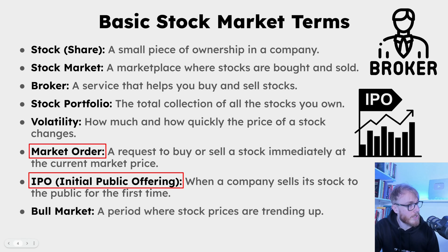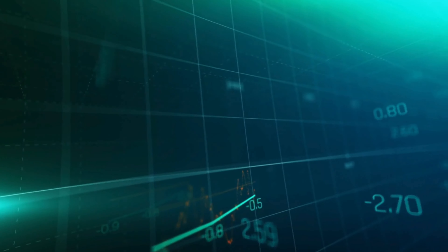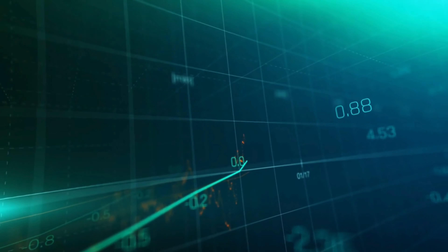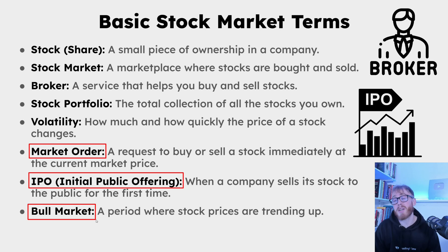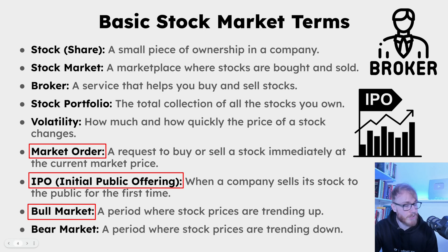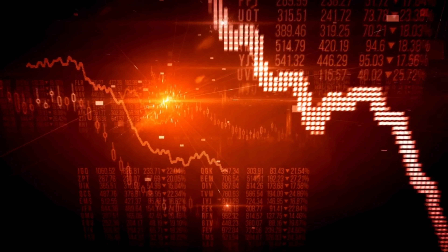Another very common and important term is bull market, which is a period where stock prices are trending up — on average moving to the upside. The other very common term is bear market, which is basically a period where stock prices are trending down.